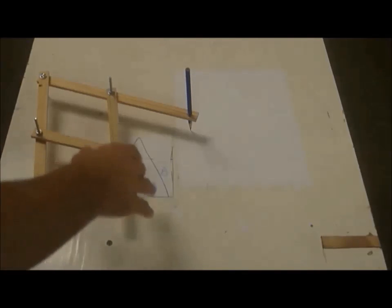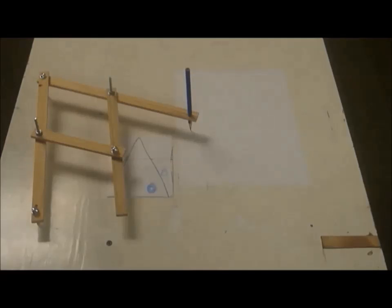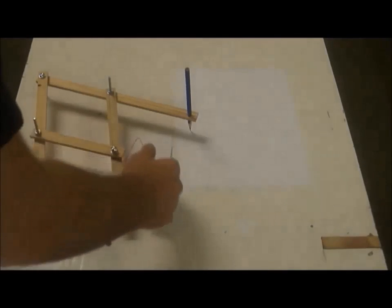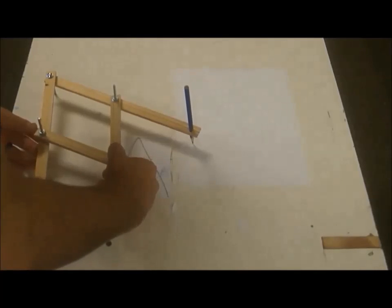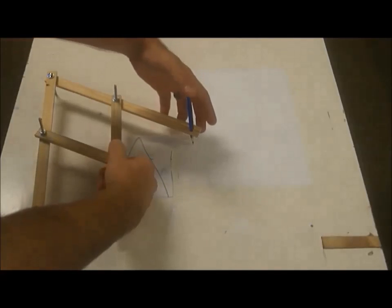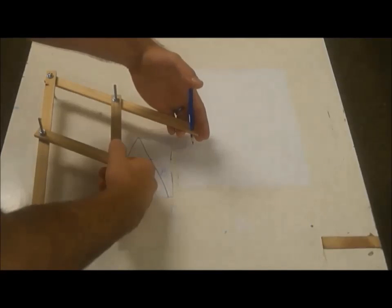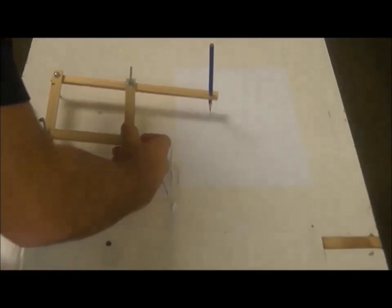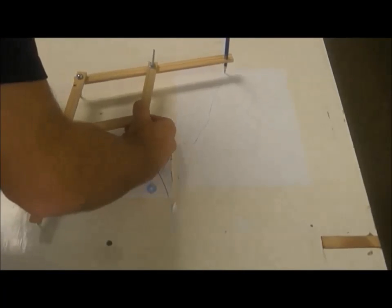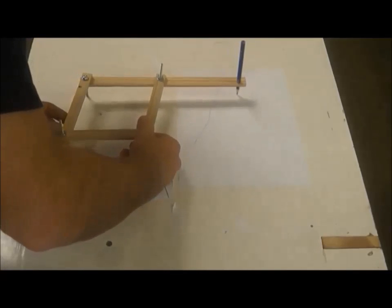So hopefully you can see I've got a letter out here. It's an A, and I'm just going to copy the A down here using the pantograph. It's a little tricky. We've got to make sure that our pencil's on there nice and tight. And I just follow it. Hopefully you can see this letter show up.